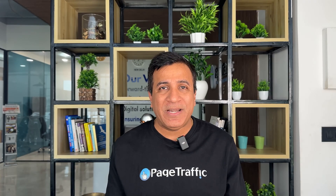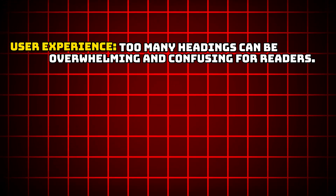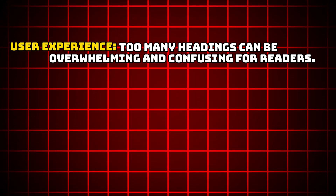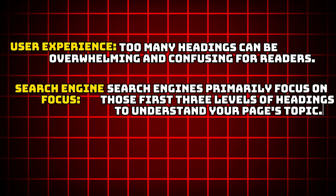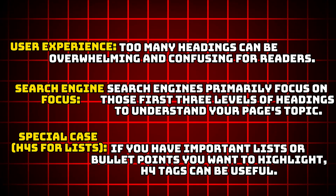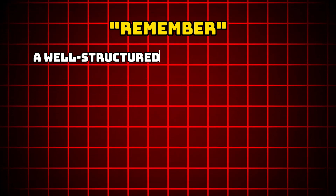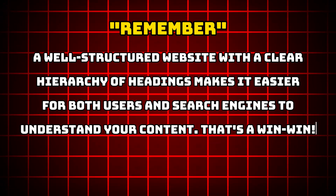Best practices — keep it simple. You might be wondering why stop at H3 tags. User experience: too many headings can be overwhelming and confusing for readers. H1, H2 and H3 tags provide the perfect amount of structure for most content. Search engines primarily focus on those first three levels of headings to understand your page topic. Special case — H4 for lists: if you have an important list of bullet points you want to highlight, an H4 tag can be useful. My recommendation: stick to H1, H2 and H3 tags for most of your content. If you have a strong reason to visually emphasize a list, then H4 tags are your go-to. A well-structured website with a clear hierarchy of headings makes it easier for both users and search engines to understand your content — that's a win-win.